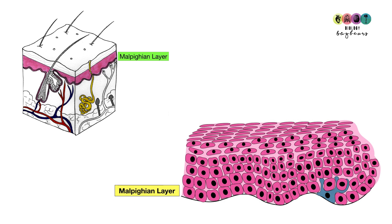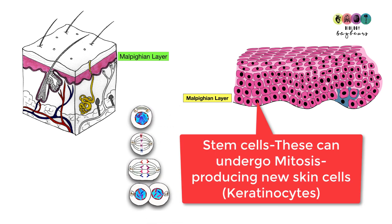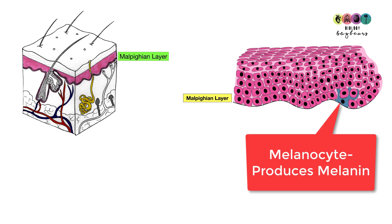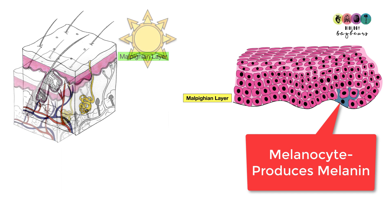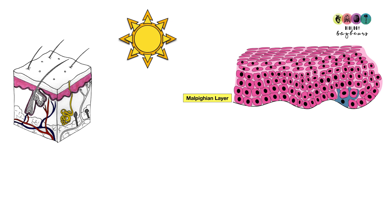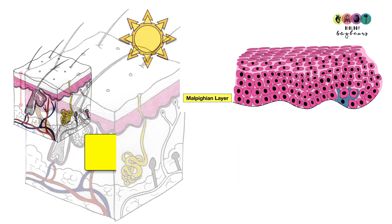The malpigian layer is a single layer of cells that sits on a basement membrane. These cells are special stem cells that can undergo mitosis to produce skin cells called keratinocytes. There's also another type of cell here called a melanocyte, which produces melanin. Melanin gives our hair and skin colour, but more importantly, it protects our skin from the damaging effects of UV radiation — it's our natural sunscreen.